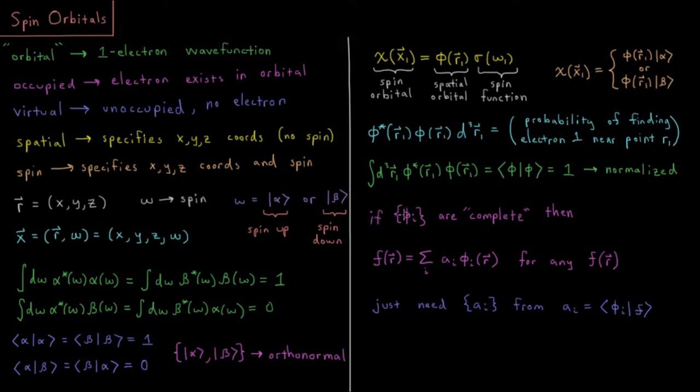So if the set of all of these spatial orbitals we have are said to be complete, then what we have is that any function of three-dimensional space, any function of x, y, and z, could be defined in the following way as a sum from i equals 1 to however many of these there are. Typically, that would be an infinite number if it was complete...